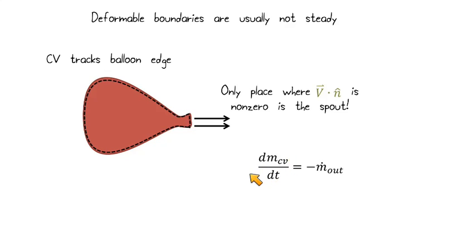We have to have some value for this dmCV/dt term. And in fact, it's going to be the rate at which mass changes in the control volume is equal to the rate at which it leaves, with the minus sign telling us that's negative mass that's coming out.